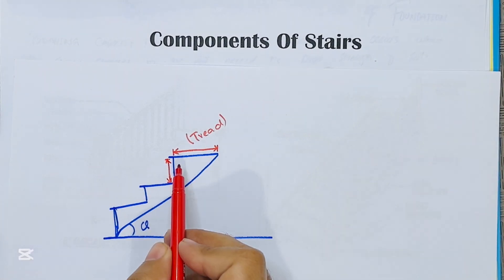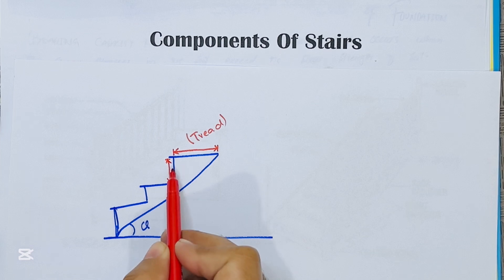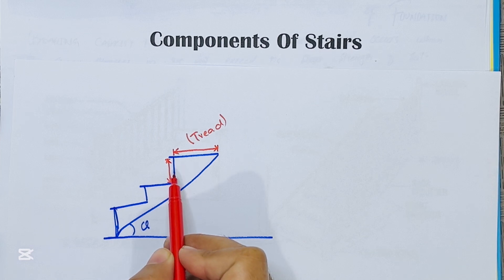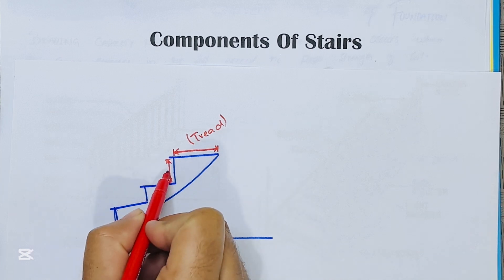The vertical member of the step is known as riser. It is used to support and connect successive treads. This is riser.